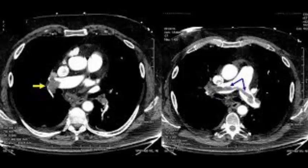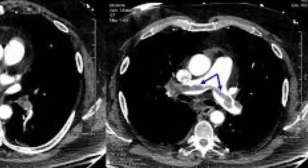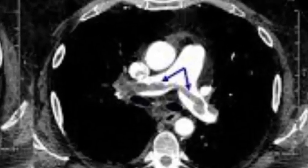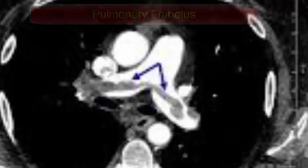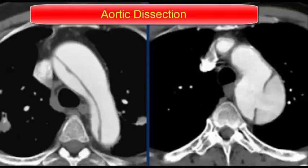The most common life-saving uses of contrast CT in cardiovascular diagnosis include pulmonary embolism and aortic dissection. Contrast scans are very useful for imaging the aorta in suspected aortic dissection and the pulmonary arteries and branches in suspected pulmonary embolism.